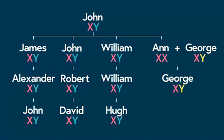You can see that because the Y chromosome can only be inherited from the father, there is an unbroken line of inheritance through which the Y chromosome passes from father to son, very similar to the way in which surnames are passed on.